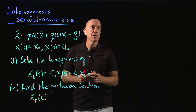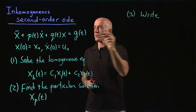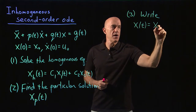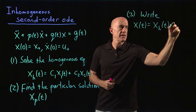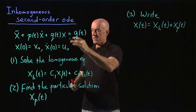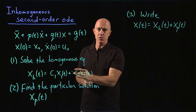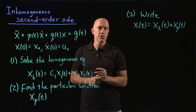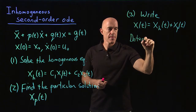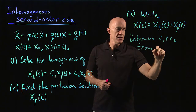So that's the first two steps. The third step is to write the general solution of this differential equation, x of t, as the sum of the homogeneous solution plus the particular solution. When we do that and add these two solutions, we can use the two free constants in the homogeneous solution to satisfy the two initial conditions. Finally, we need to determine c1 and c2 from the initial conditions.